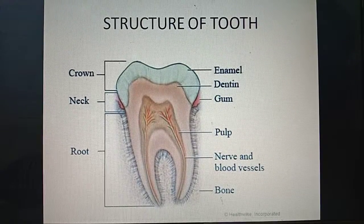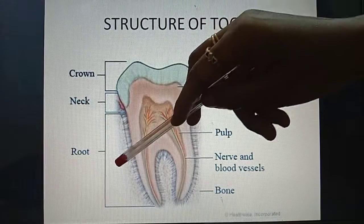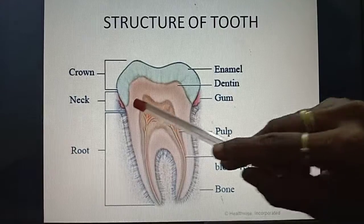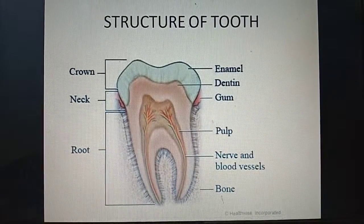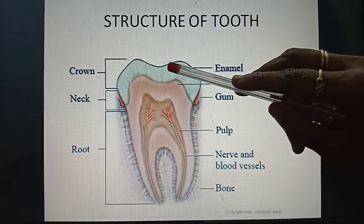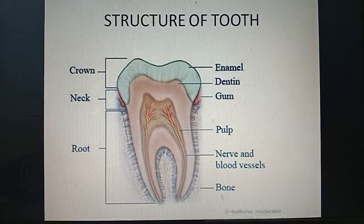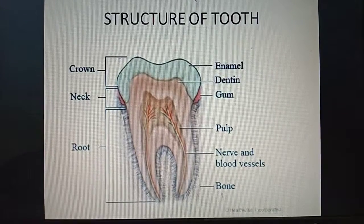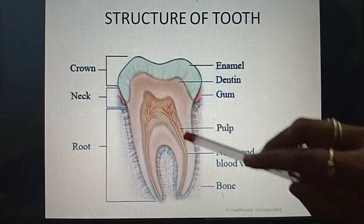Our tooth is made up of three parts: the crown, the neck, and the root. The crown is the part of the tooth that can be seen above the gum — so this is the crown. The neck is just below the crown, which is the gum area. The root is the part of the tooth which lies inside the gum, and it holds the teeth to the jaws.